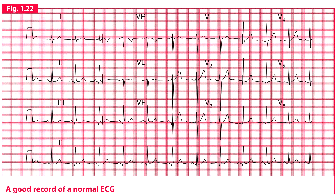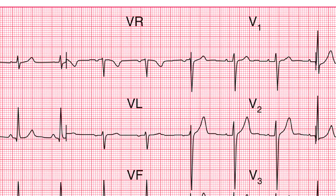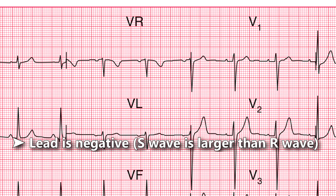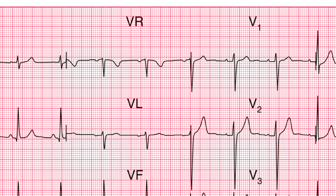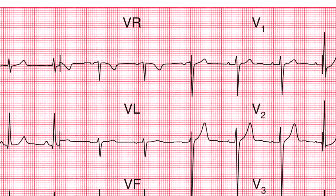Focus on lead VR. Notice that it is negative, which means its downward deflection is greater — in other words, the S wave is greater than the R wave. Also note that P and T waves are inverted in this lead. These are all the normal features of this lead.